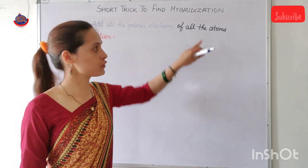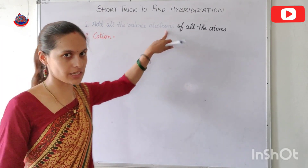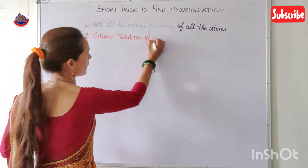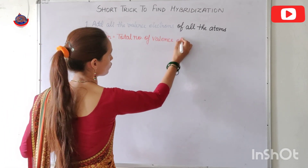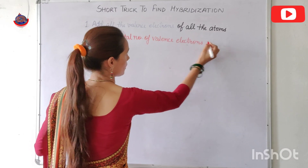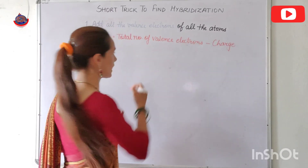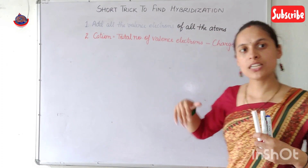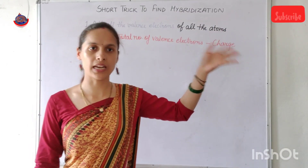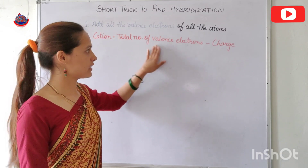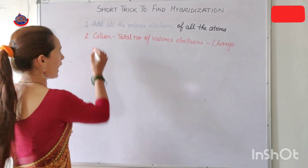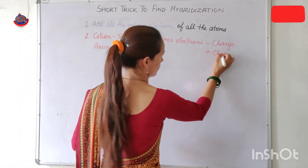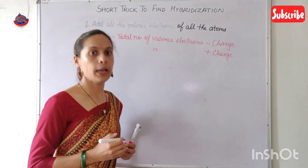Step 2 applies to ionic species. If the ionic species is a cation, you subtract the charge from the total number of valence electrons: total valence electrons minus charge. So if the cation is +1 subtract 1, if +2 subtract 2, if +3 subtract 3. If it is an anion, then total valence electrons plus charge.